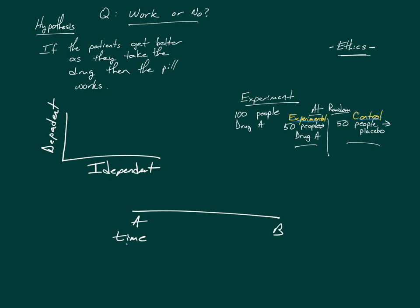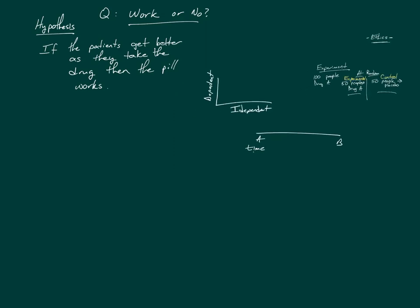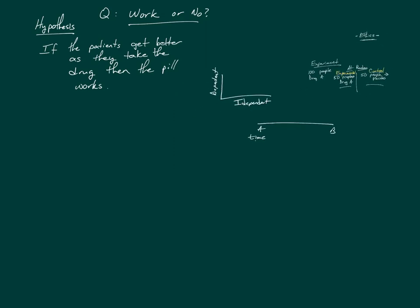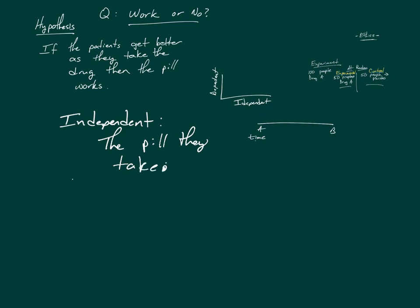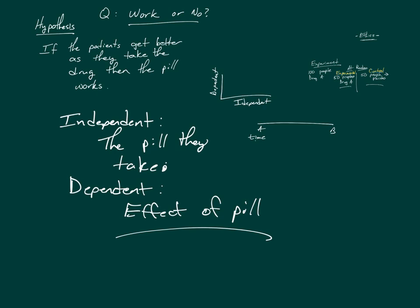In this drug experiment, we're measuring whether people get better or not. What determines if people get better? The pill they take. So the independent variable is the pill they take. The dependent variable is the effects of the pill. You should be able to do the rest on your own — that's everything.